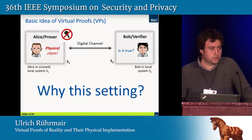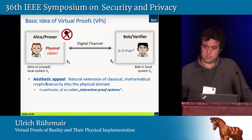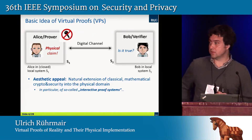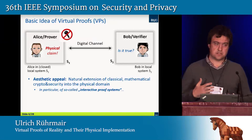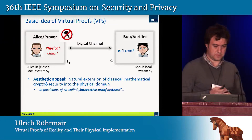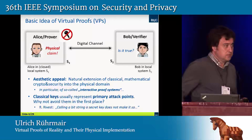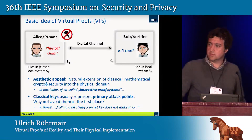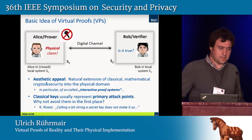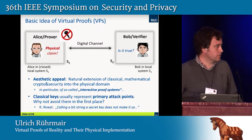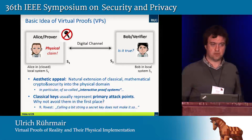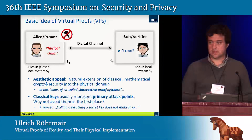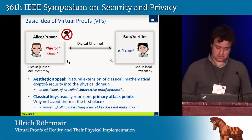Why did we choose that setting? There are two reasons. First, there's some aesthetic appeal — it's a natural extension of classical mathematical crypto and security into the physical domain, specifically a physical version of interactive proof systems. Second, classical keys usually represent primary attack points. There's a striking quote by Ron Rivest from his keynote at Crypto 2011: 'calling a bit string a secret key does not make it so, but rather identifies it as an interesting target for the adversary.' So why not avoid such secret keys in the first place?